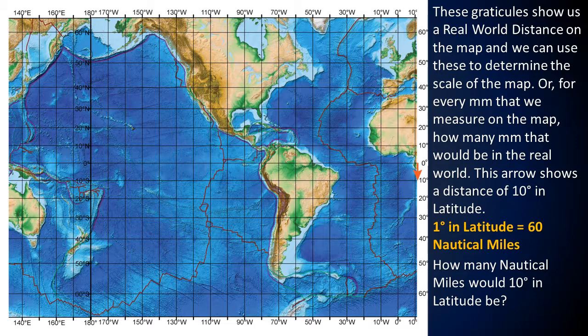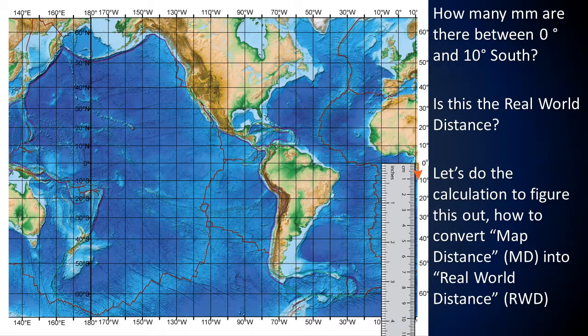This arrow shows a distance of 10 degrees in latitude. Note that 1 degree in latitude is 60 nautical miles, so 10 degrees in latitude would be 600 nautical miles. There are about 11 millimeters between 0 degrees and 10 degrees south on the map. This is not the real world distance.